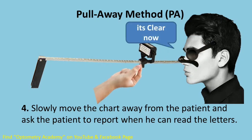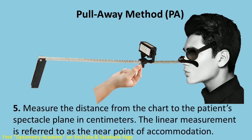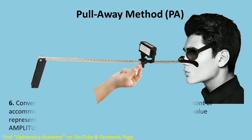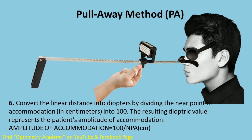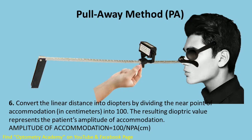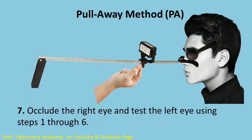Measure the distance from the chart to the patient's spectacle plane in centimeters; this linear measurement is referred to as the near point of accommodation (NPA). Convert the linear distance into diopters by dividing 100 by the NPA. The resulting diopter value represents the patient's amplitude of accommodation. The formula is: 100 ÷ NPA. Occlude the right eye and test the left eye using steps one through six. This method is helpful to use with children or patients who do not understand the concept of blurry letters.